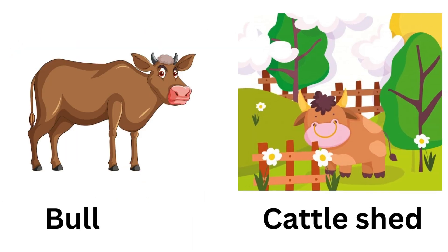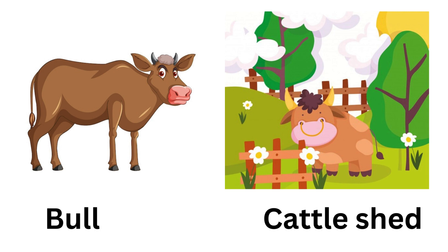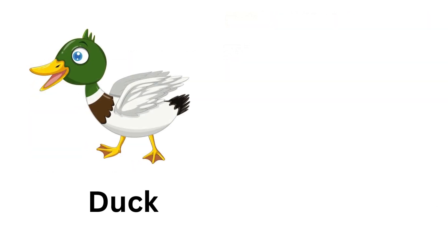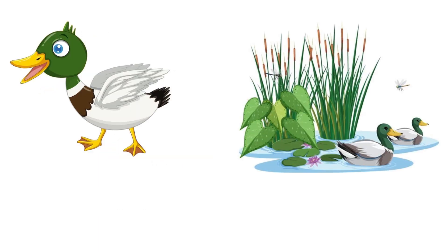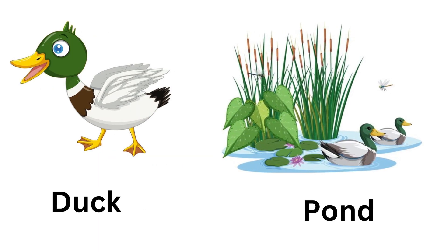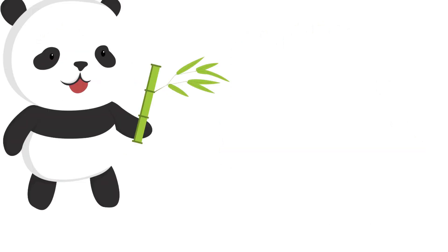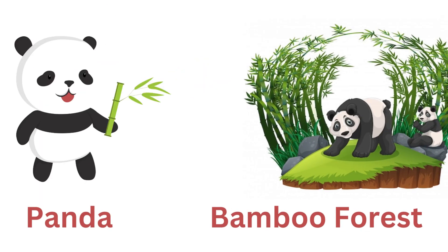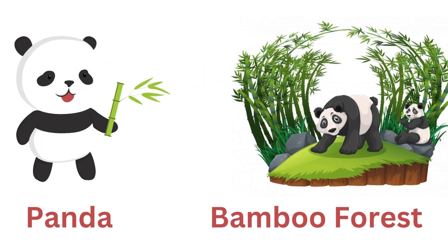Bull — bull lives in a cattle shed. Duck — duck lives in a pond. Panda — panda lives in a bamboo forest.